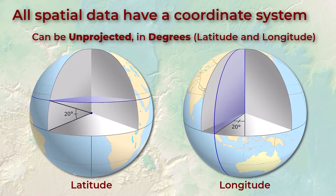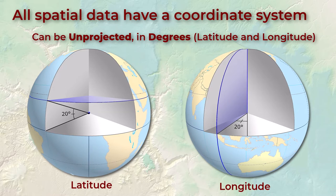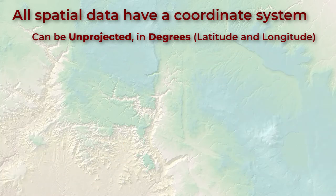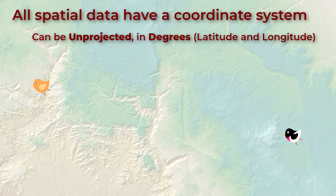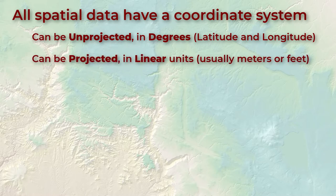Longitude measures the angle from the axis that connects the north and south poles. Now latitude and longitude do a great job describing position on the planet, but this coordinate system makes it difficult to do common analytical functions like calculating distance and area.